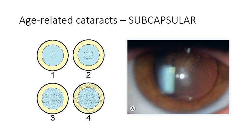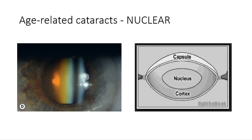You can also classify subcapsular cataracts as anterior or posterior, but you will be required to understand what a subcapsular cataract looks like. The next type of age-related cataract is a nuclear cataract, which is an exaggeration of the normal ageing change. These cataracts are often associated with myopia due to an increase in the refractive index of the nucleus, and this results in some older patients being able to read without their glasses again because they become myopic and can see things close up clearly without glasses.